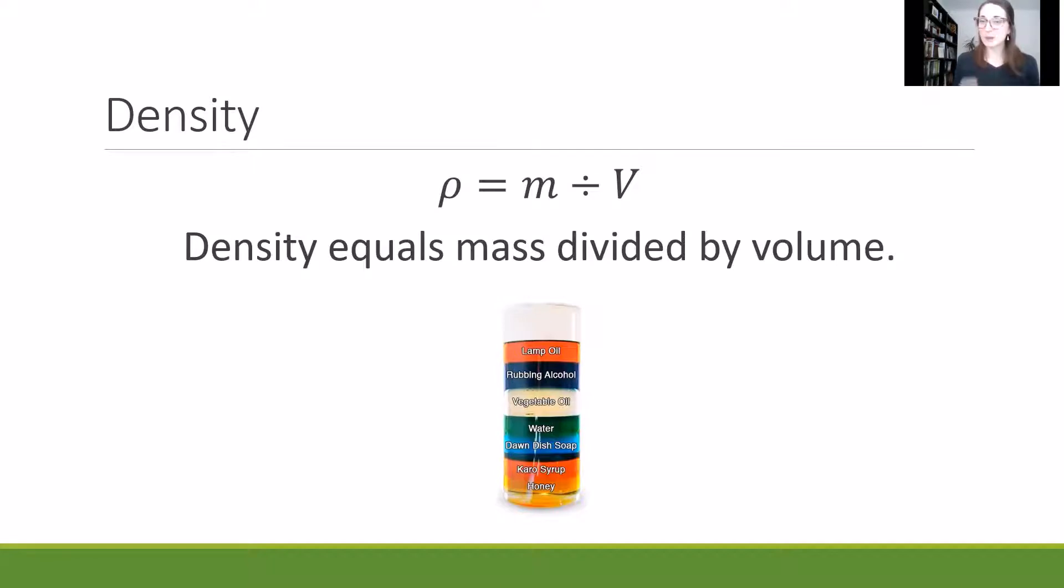So when I think about density, I want to keep in mind the equation, which looks like this. It's a Greek character, looks kind of like a P, equals M divided by V. And that means density equals mass divided by volume. So to get that density, find the mass, find the volume, and then divide.